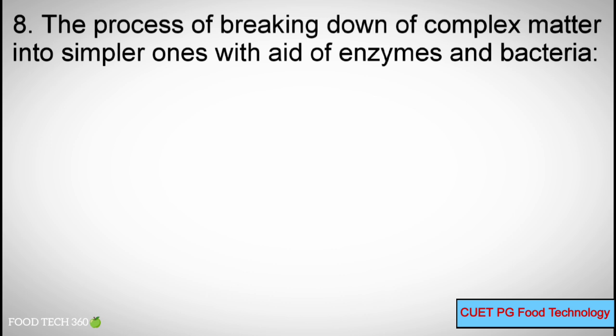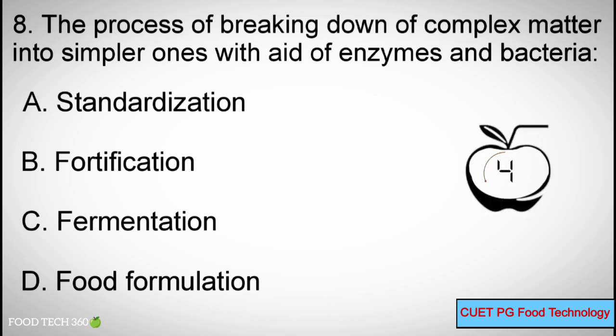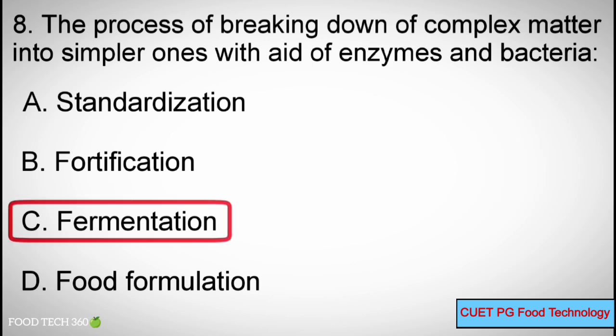Question number 8. The process of breaking down of complex matter into simpler ones with the aid of enzymes and bacteria: Options: A. Standardization, B. Fortification, C. Fermentation, D. Food Formulation. Correct answer: C. Fermentation.